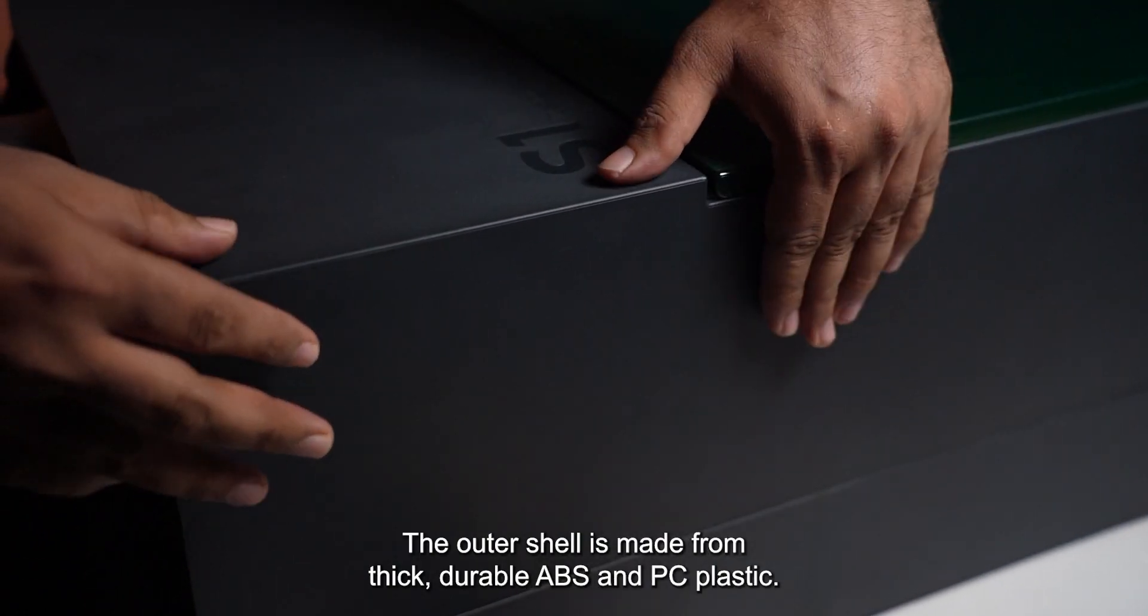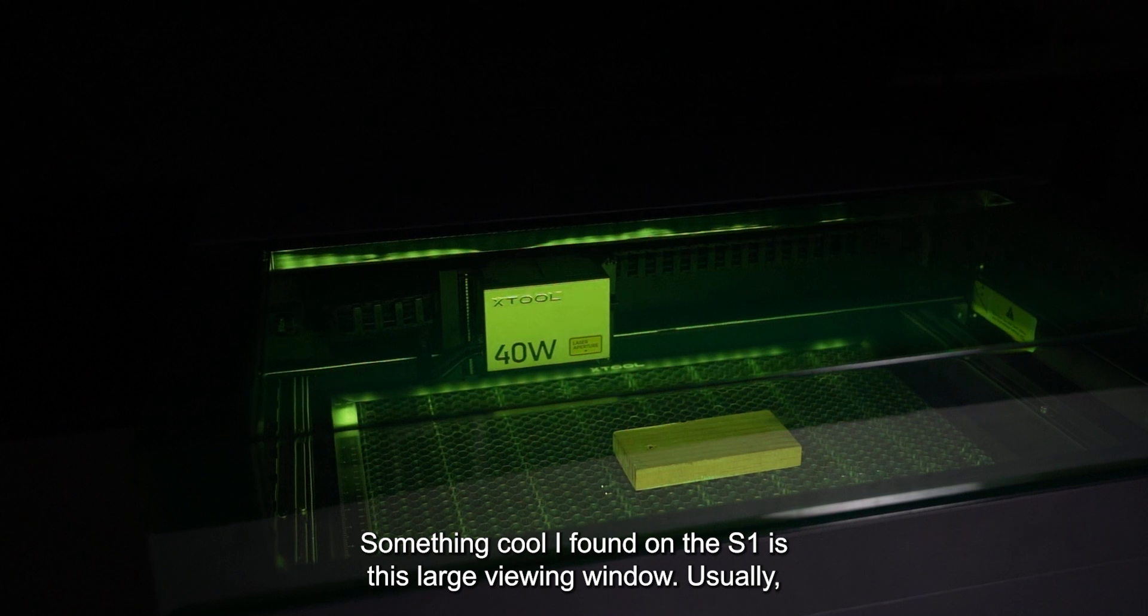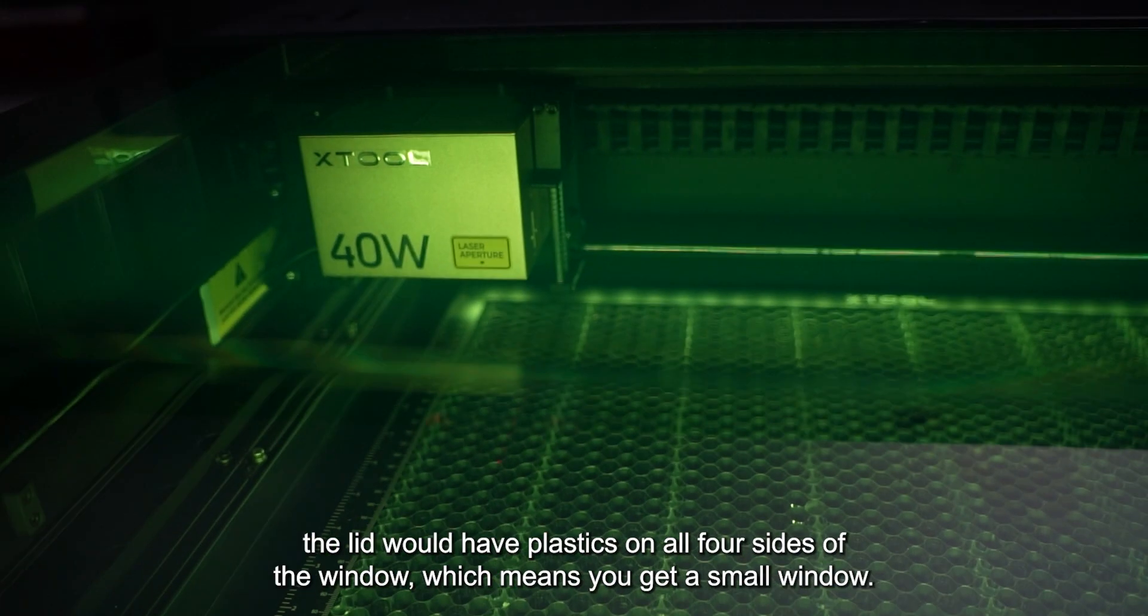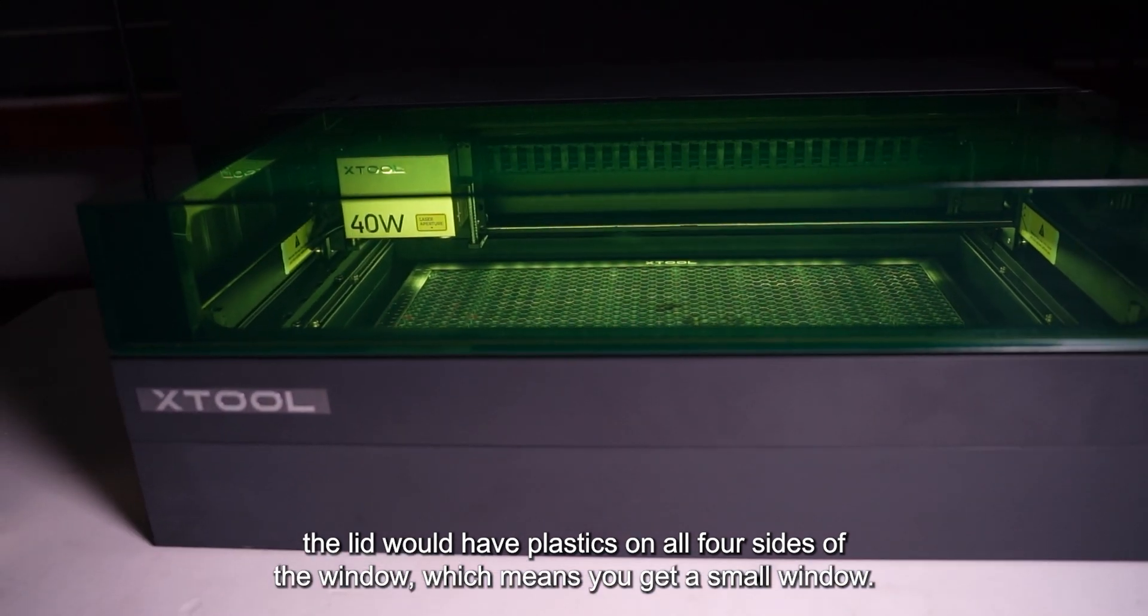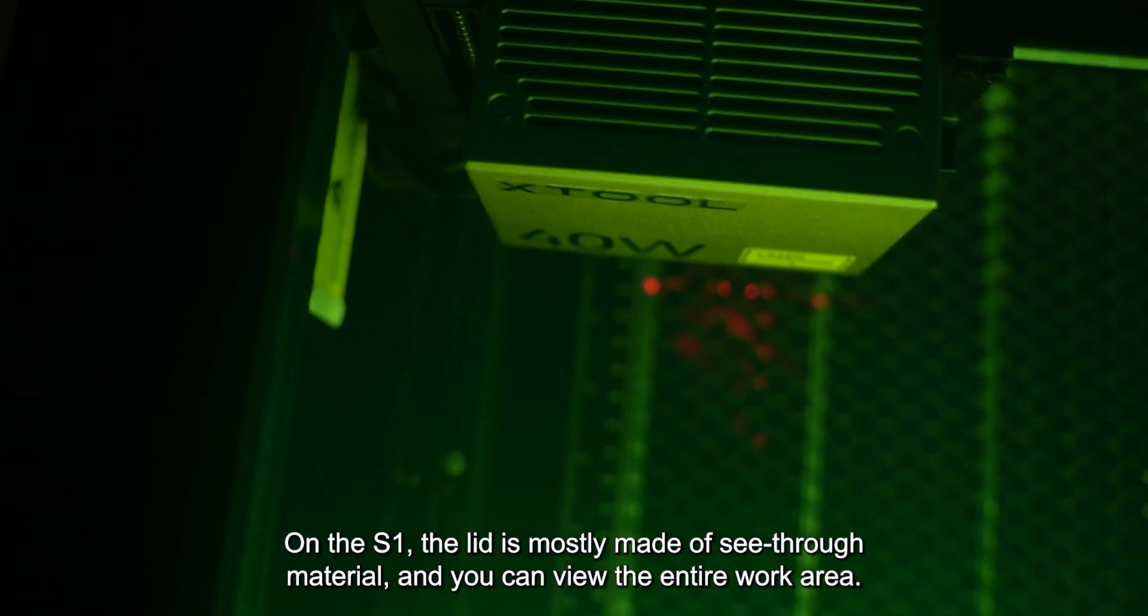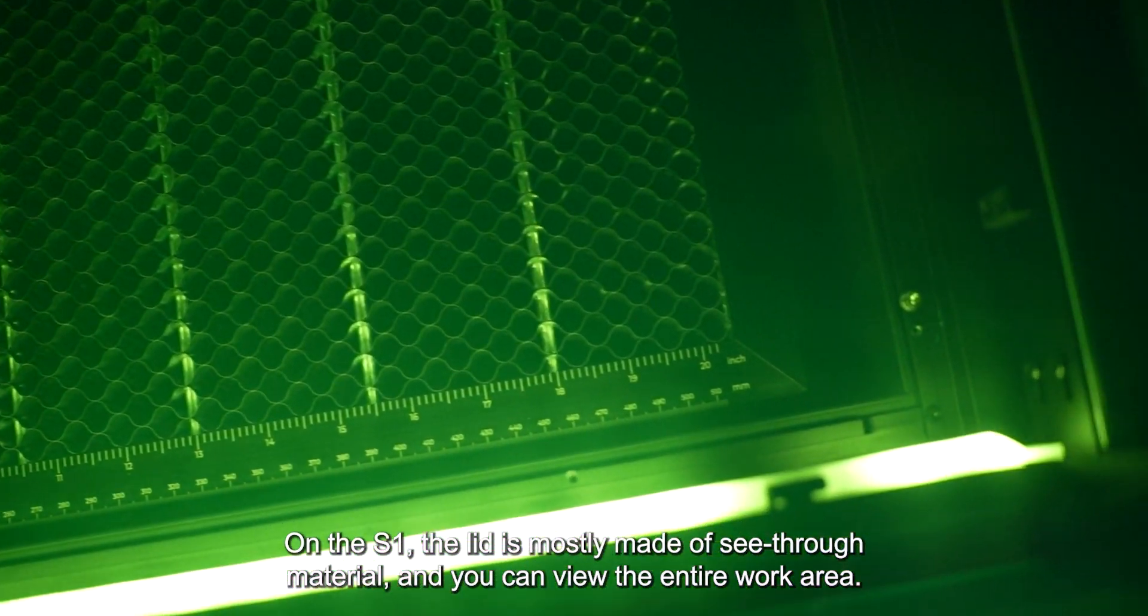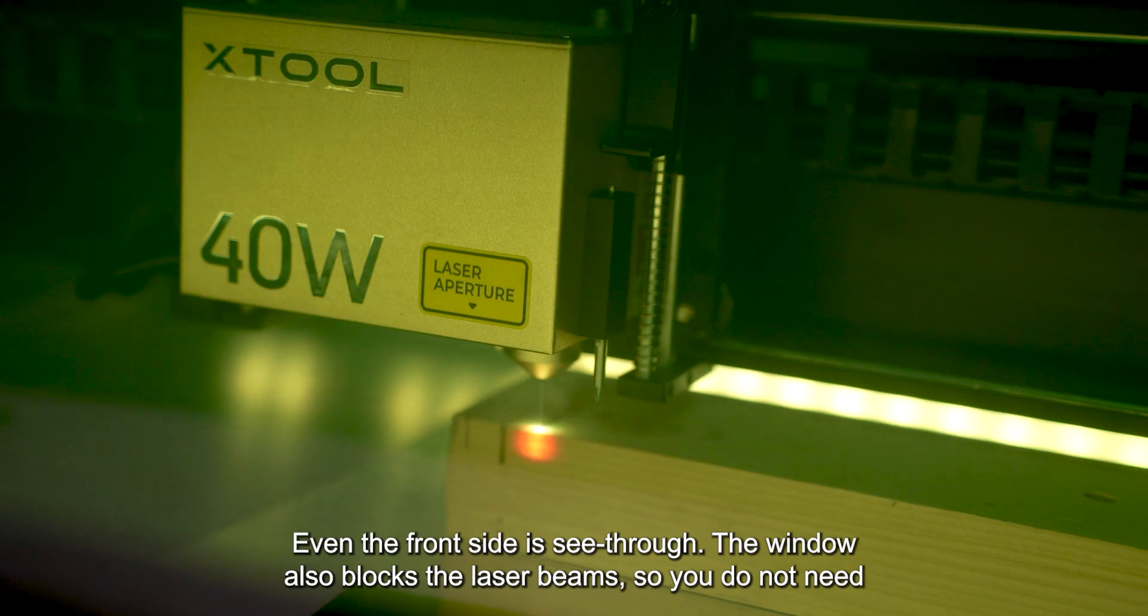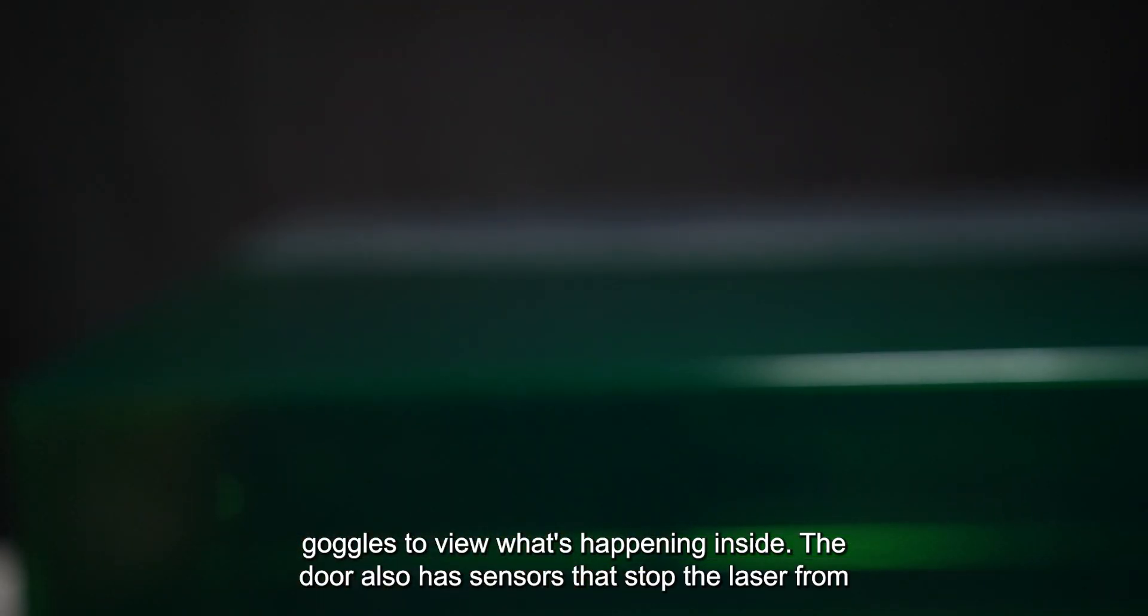The outer shell is made from thick, durable ABS and PC plastic. Something cool I found on the S1 is this large viewing window. Usually, the lid would have plastics on all four sides of the window, which means you get a small window. On the S1, the lid is mostly made of see-through material and you can view the entire work area. Even the front side is see-through. The window also blocks the laser beams, so you do not need goggles to view what's happening inside.